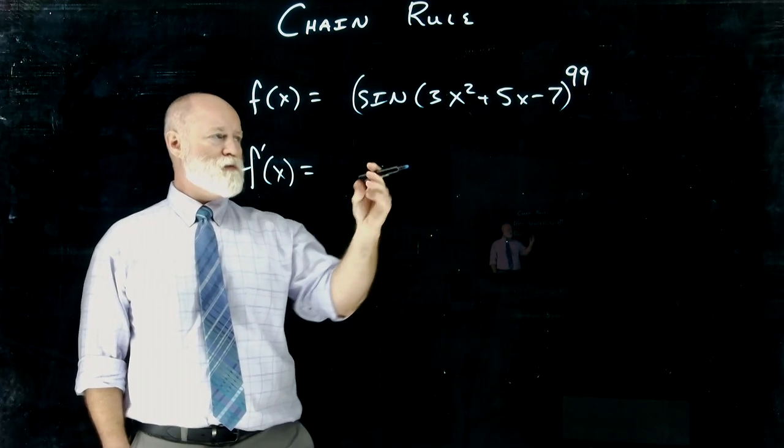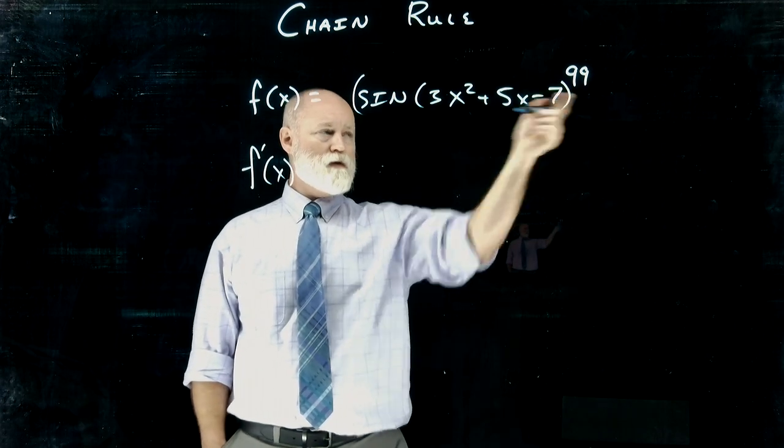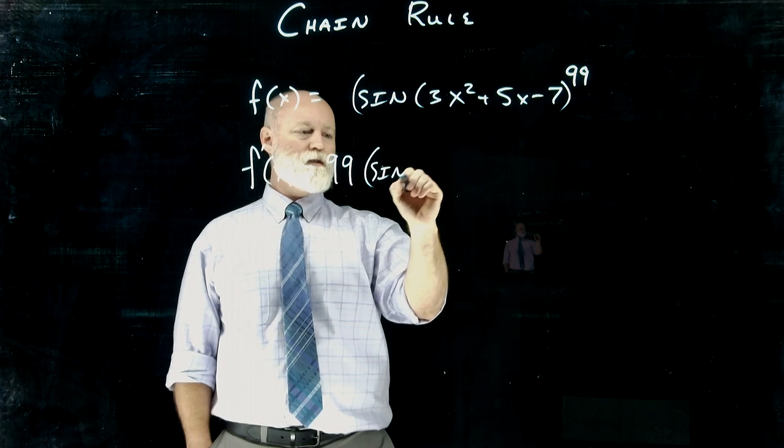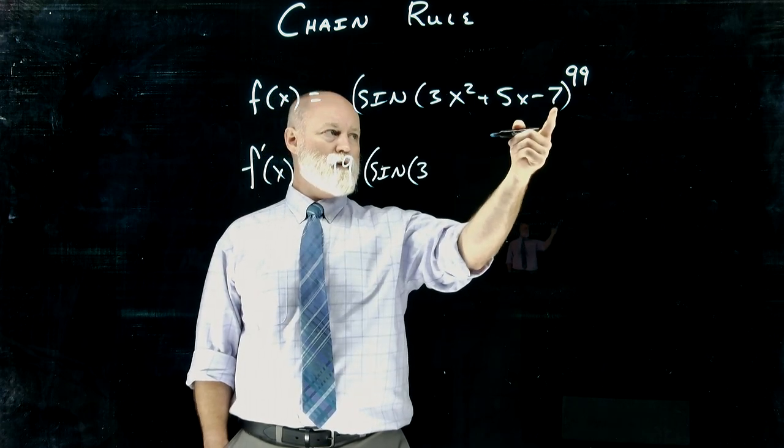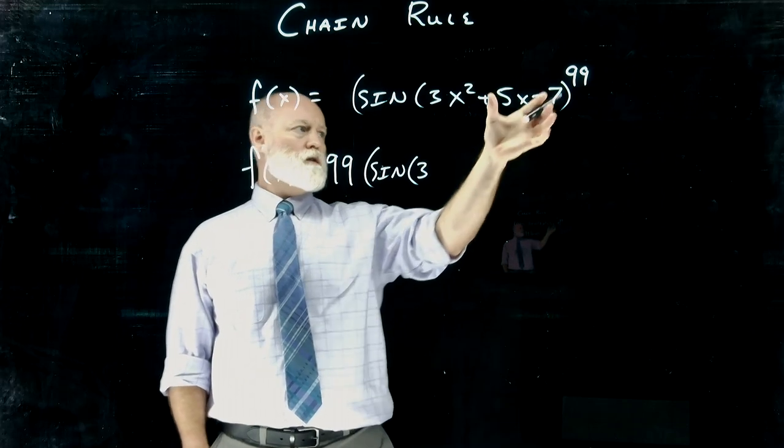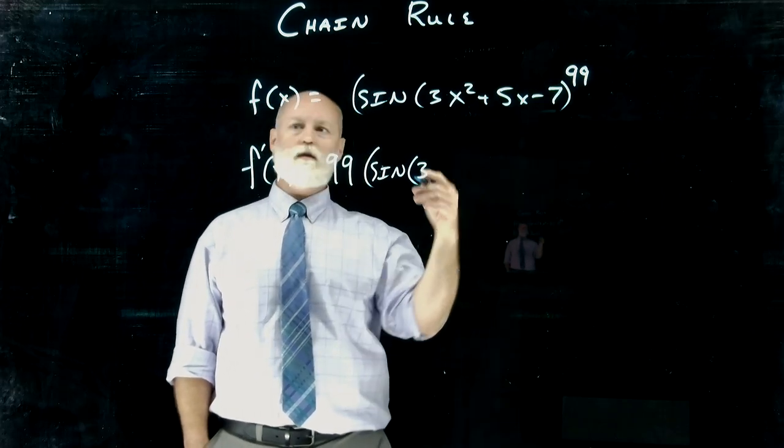We'd start on the outermost piece, which would be the 99, something to the 99th power. So that'd be 99 times all that interior pieces. So this would be thinking of this as being the k, the sine would be the g function, and then the thing to the 99th power would be the h function.